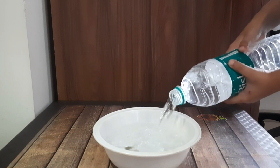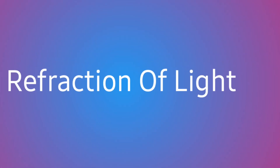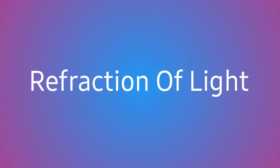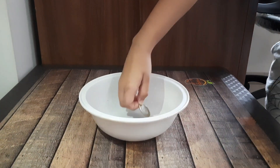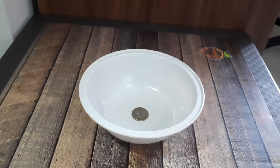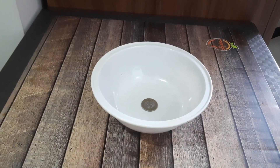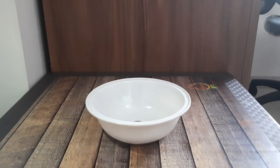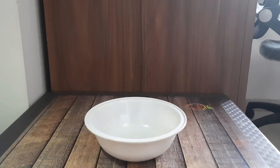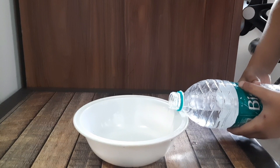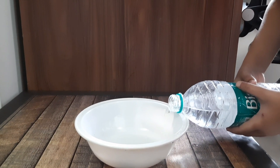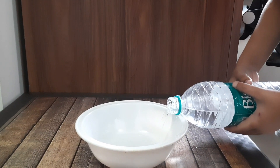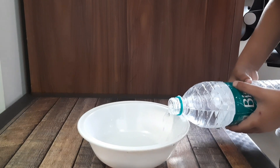First we are going to show you the trick and then we will see how it is related to the phenomenon of light. Take a bowl and keep a coin inside the bowl. You can see the coin clearly. Now move backwards until the coin disappears from your view. Then start adding some water to the bowl and you will start seeing the coin slowly, without changing your position.